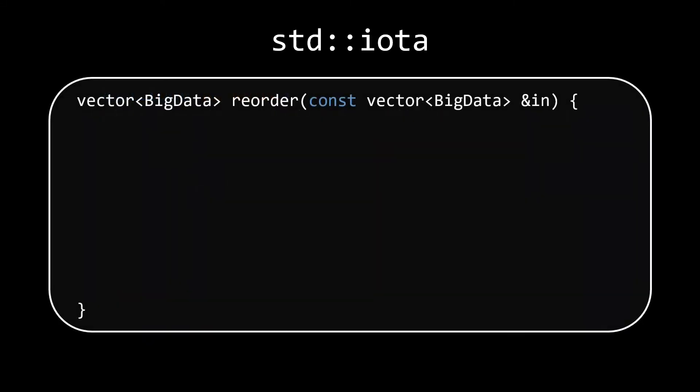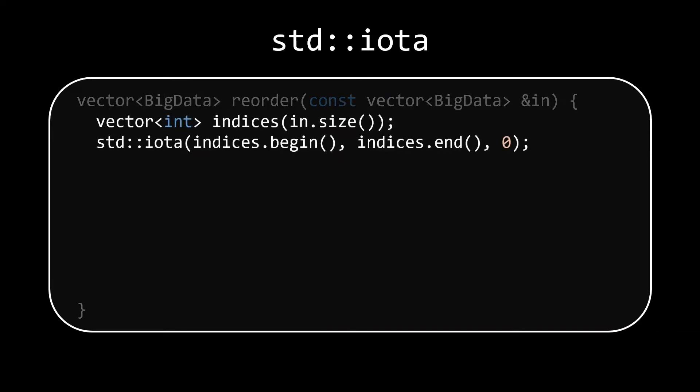I have used iota in the past when I needed to iteratively rearrange the order of big, expensive to copy elements in a container. Instead of moving the real data around in every iteration, I would first create a container with indices for each of the elements in the input. This is where iota comes in.